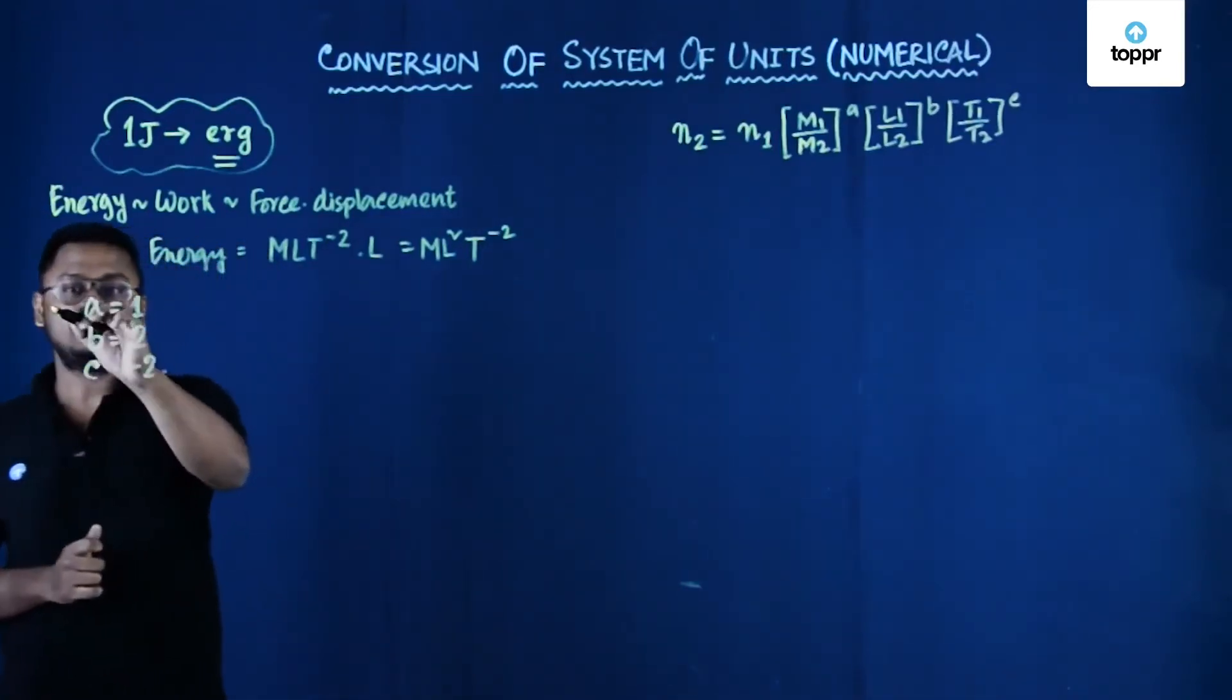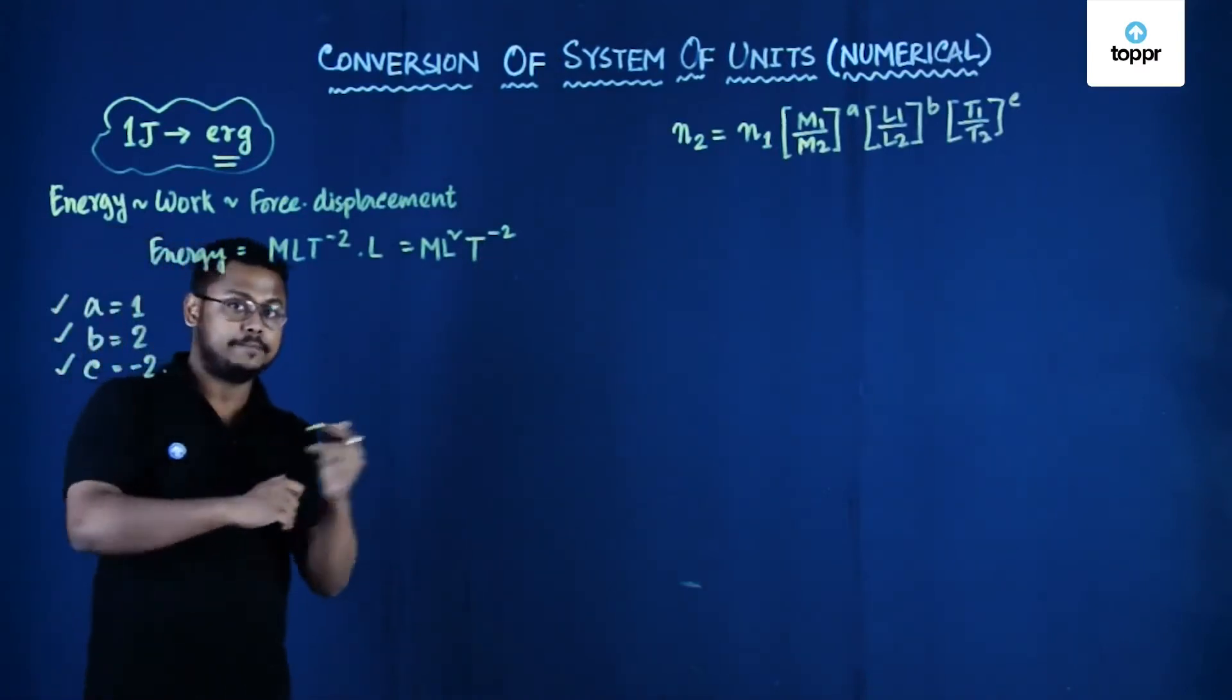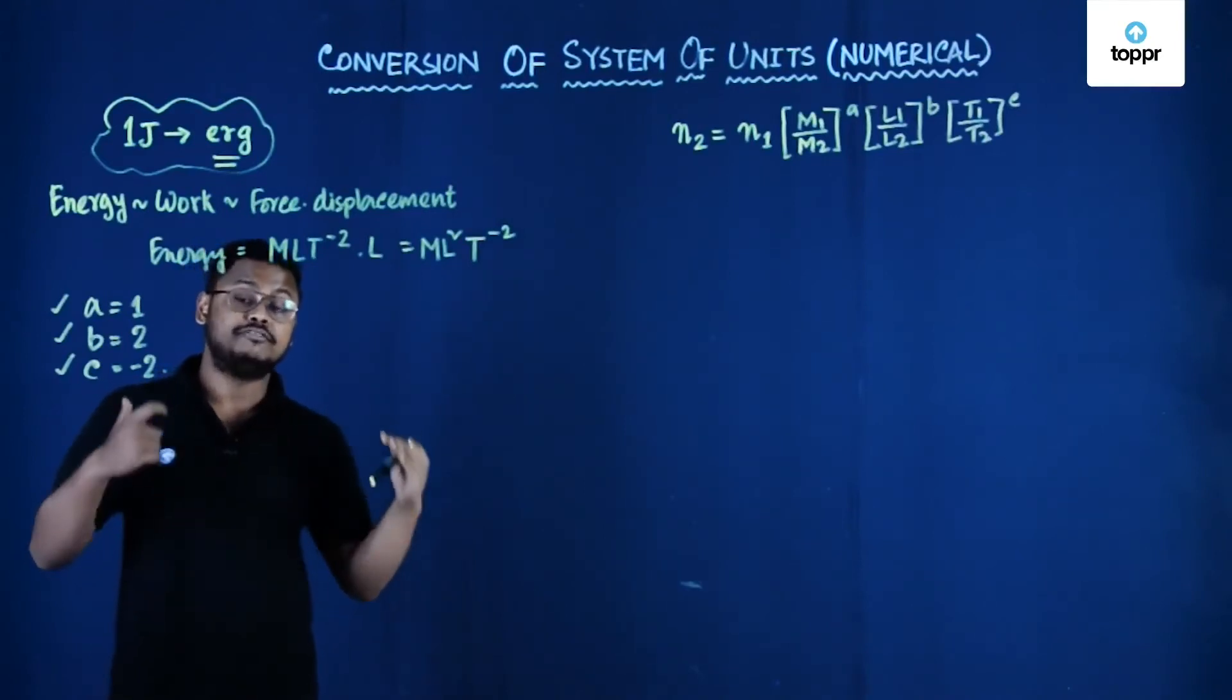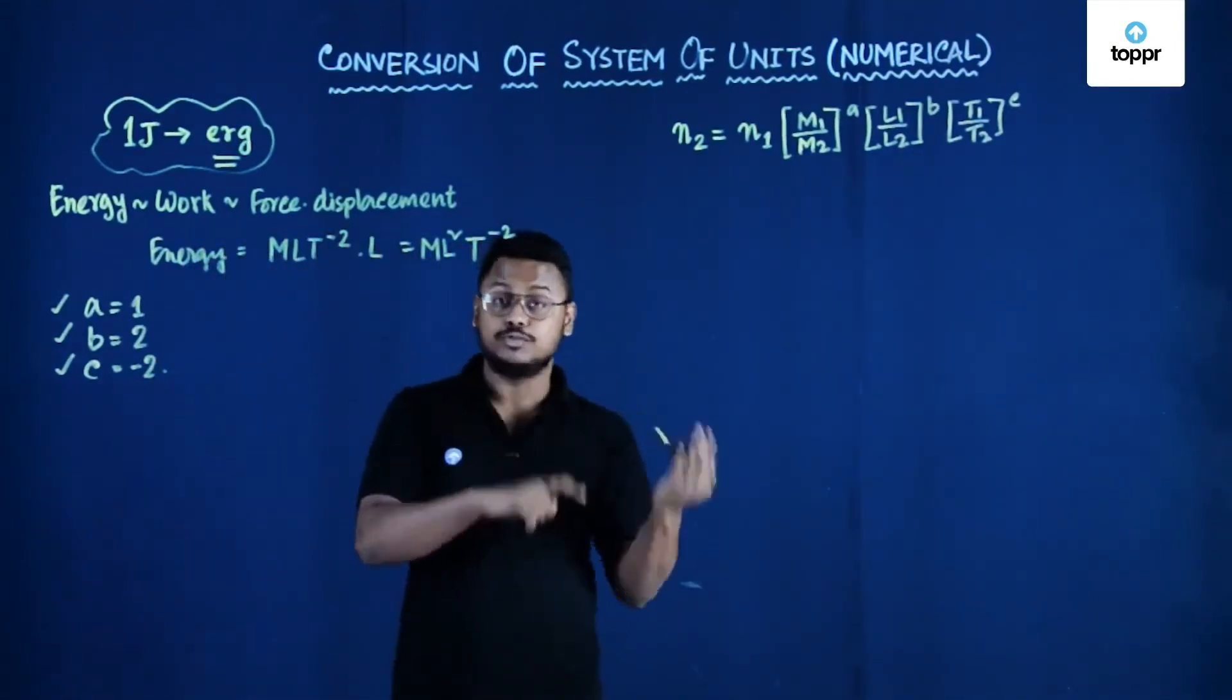So these are the value of the powers of mass, length and time. Now let us write down the magnitude of the fundamental units in old system and new system.